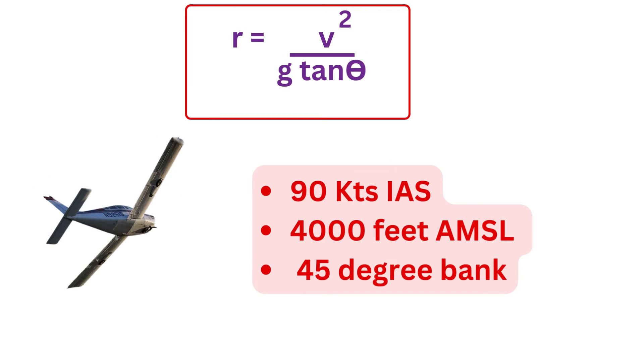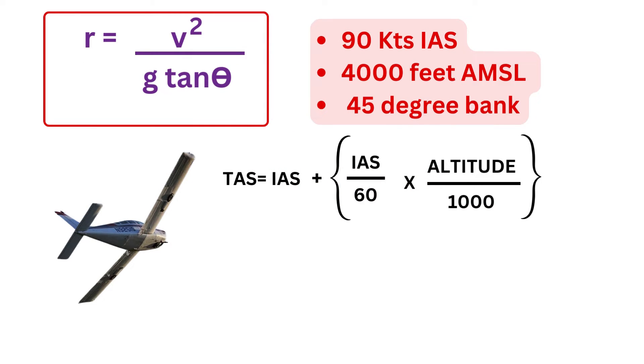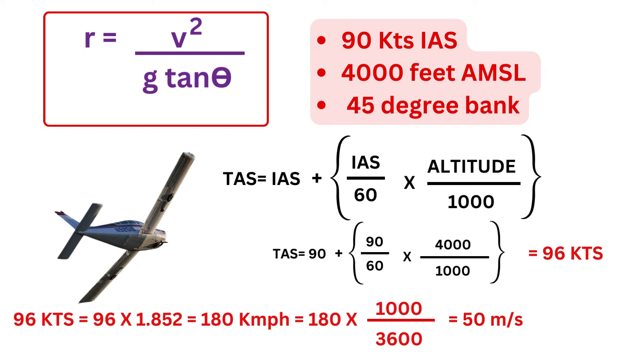So for practice, let us calculate the radius of turn for a Cessna 152 flying at 90 knots at 4,000 feet above mean sea level and turning with bank angle of 45 degree. Remember, the v here is TAS and not the IAS. So first we have to convert IAS to TAS using the formula as shown on the screen. So for 90 knots of indicated speed at 4,000 feet above mean sea level, we get TAS of 96 knots. Now since the value of g in the formula is in meter per second square, we need to convert the TAS into kilometer per hour followed by meter per second. So we get TAS of 180 kilometer per hour, which is equivalent to 50 meter per second of speed.